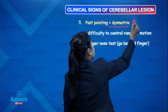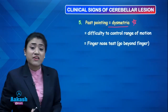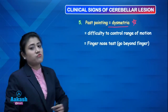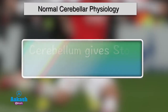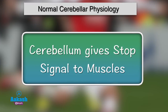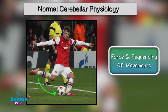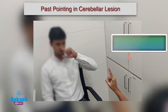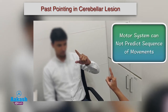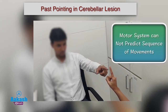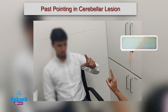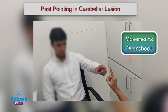The next clinical sign is past pointing, which is dysmetria. Here the patient has difficulty controlling the range of motion during any movement. The cerebellum gives a stop signal to muscles — for example, when a football player kicks for a goal, the cerebellum decides how much movement and force has to be used. In cerebellar lesion, the subconscious motor control system cannot predict how far the movement will go, so the movement overshoots the goal, causing past pointing.